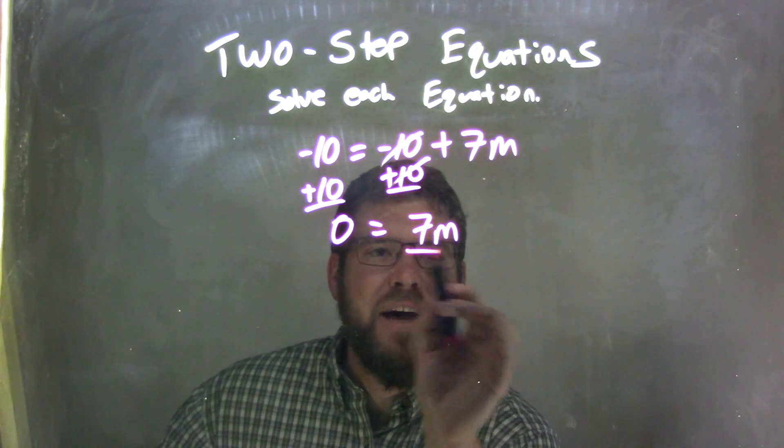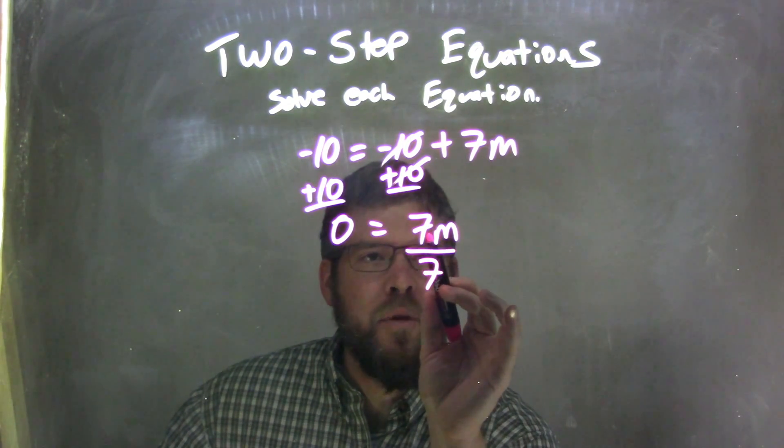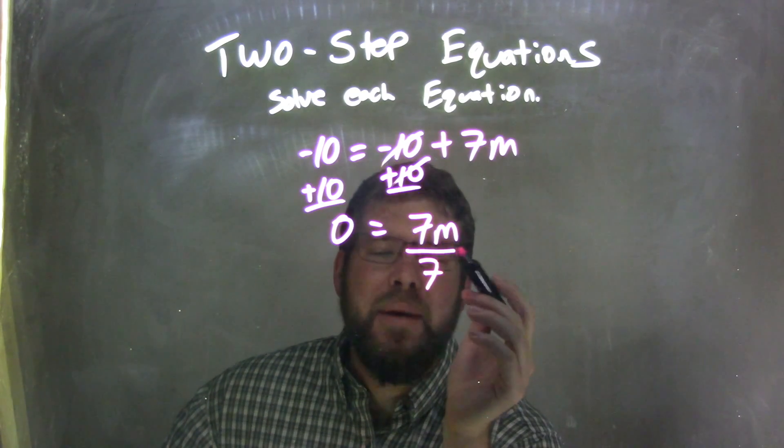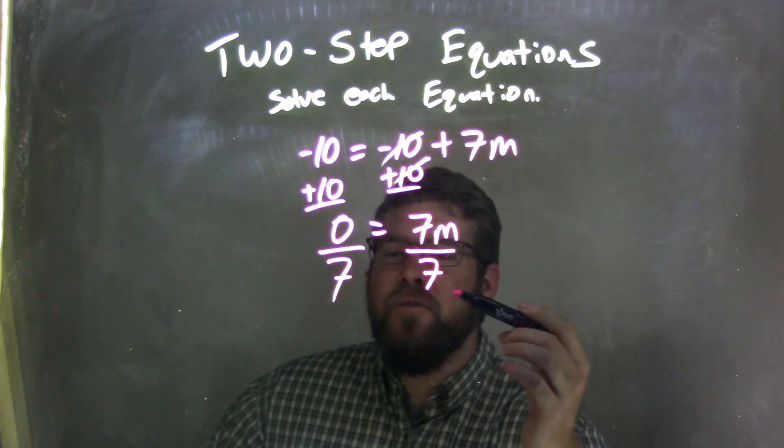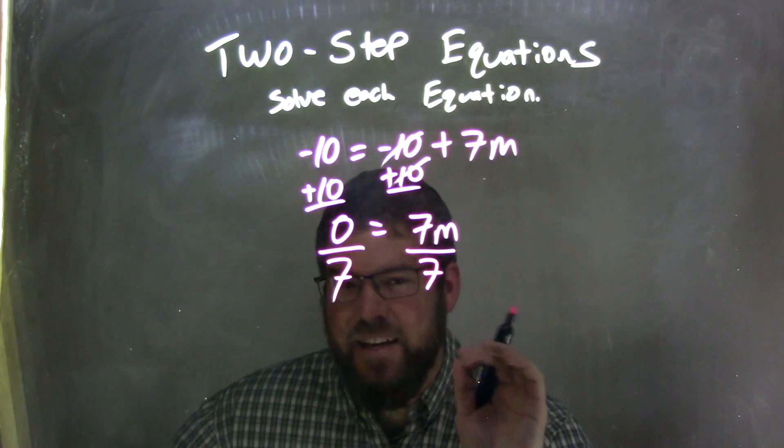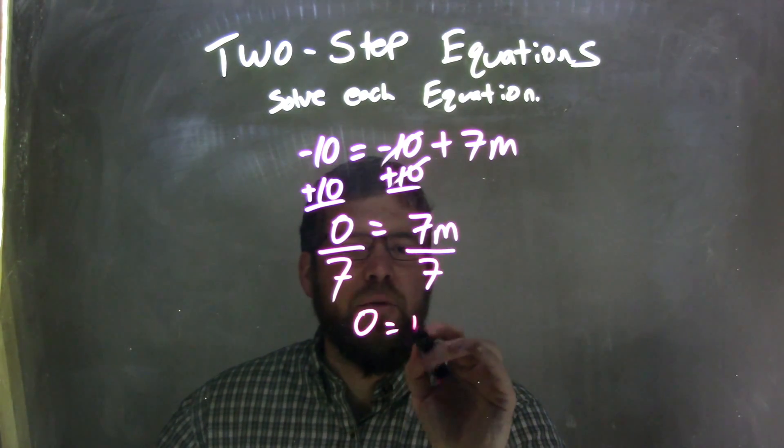So now I have 0 equals 7m. Well, I need to divide by 7 because that's the opposite of what's going on here. There's multiplication between 7 and the m. I'm going to divide by 7 on both sides, but now be careful—a lot of common mistakes here. 0 divided by 7 is just 0, right? Equals m.